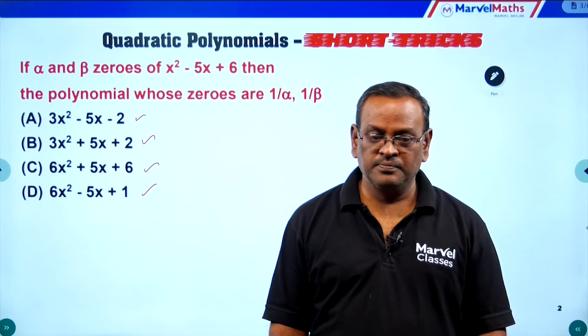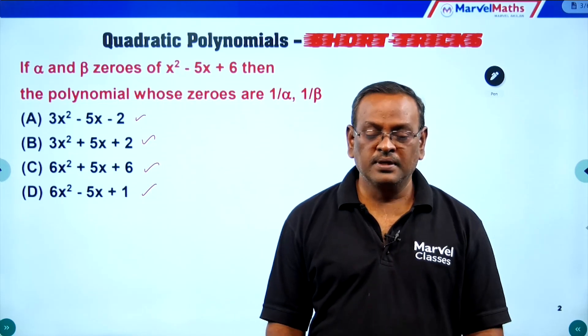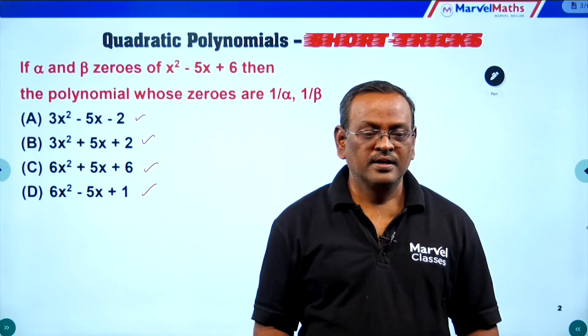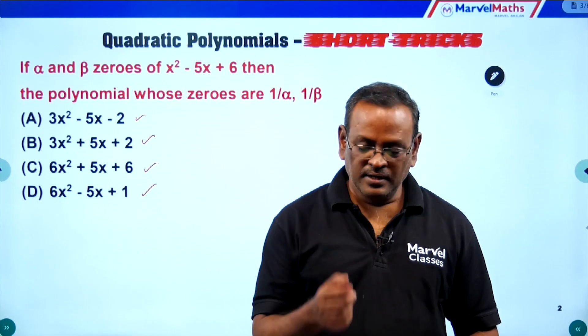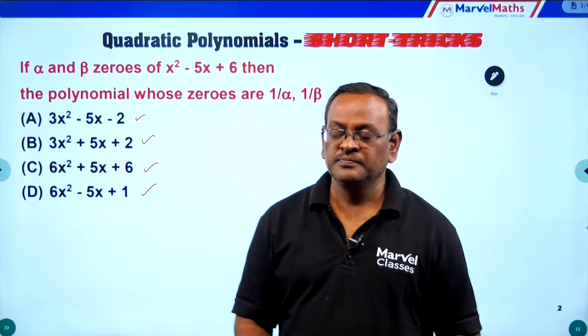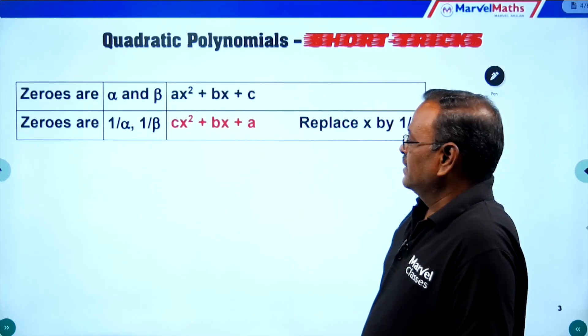Without using the regular method, the answer is option D. Well done, Arun! What short trick did you use? Sir, you taught us in class to replace the variable x by 1 by x. Tharun, did you use the short trick too? Sorry sir, I forgot the short trick, so I couldn't do it faster. Don't worry, I will explain the short trick in detail.